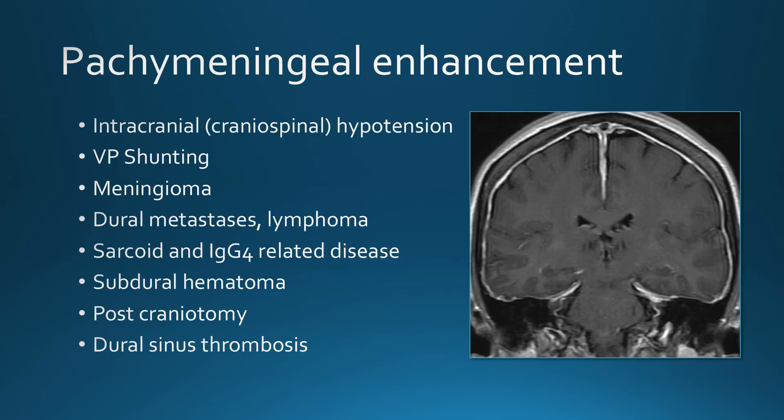Pachymeningeal enhancement has a number of causes, perhaps most importantly intracranial hypotension. VP shunting may be the same mechanism as intracranial hypotension. Then more focal processes such as meningioma, dural metastases or dural lymphoma, inflammatory processes, sarcoid, and more recently described IgG4-related disease. We also see pachymeningeal enhancement after subdural hematoma, after craniotomy, and in dural sinus thrombosis.